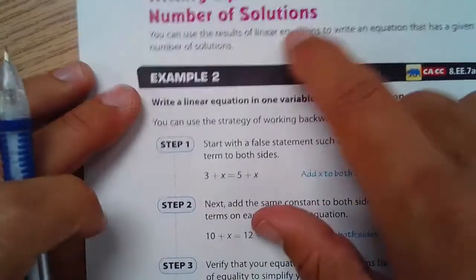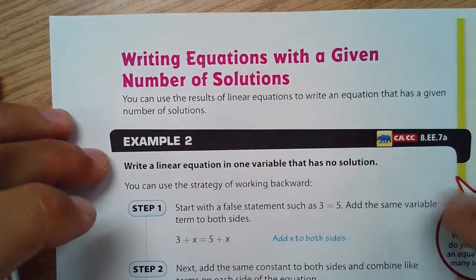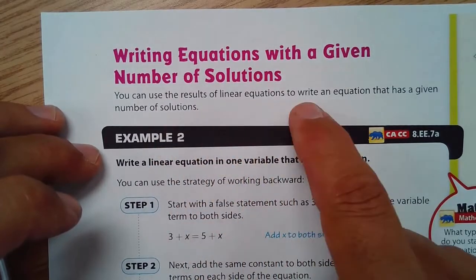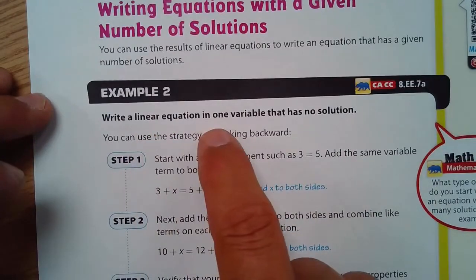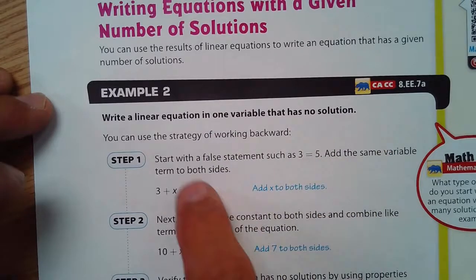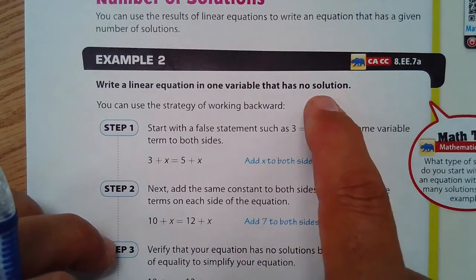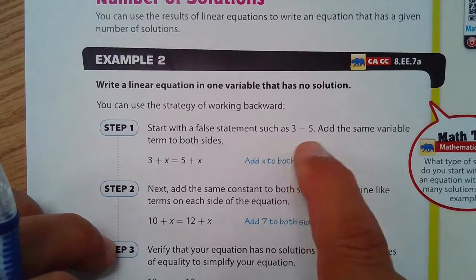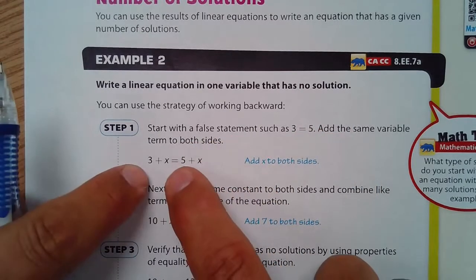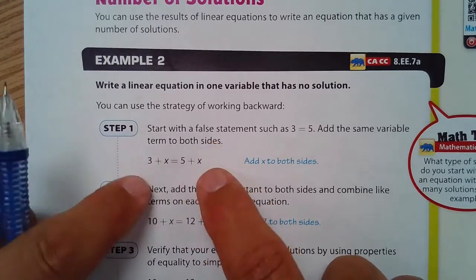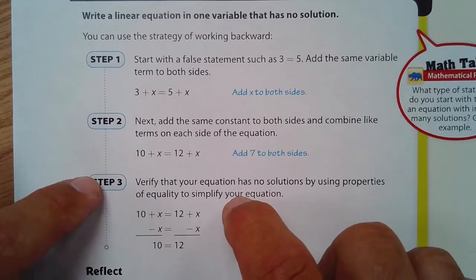Next, I have this. Writing equations with a given number of solutions. You can use the results of linear equations to write an equation that has a given number of solutions. Write an equation with... In one variable, it has no solution. We'll start with a false statement. Okay, because it has to have no solution. So, 3 equals 5. Start with that. And add the same variable to both sides. So, you get 3 equals 5. And then add x to both sides. Done. On that part.